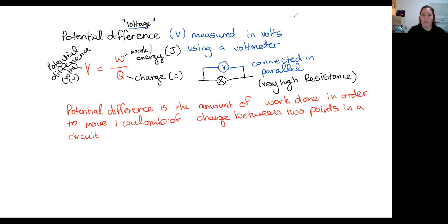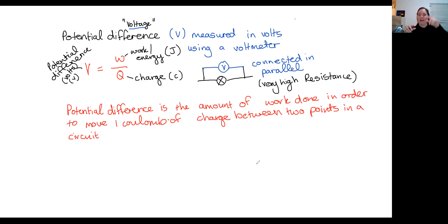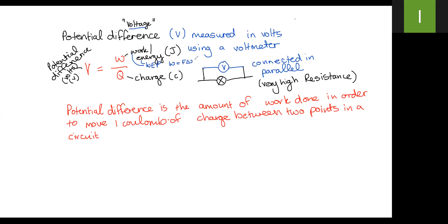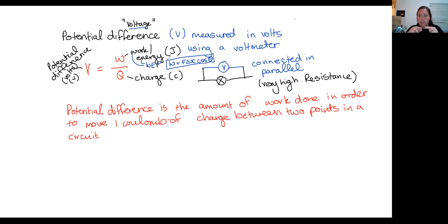There's a question about whether we could replace W with F delta X cos theta. Sometimes they have a question where you have a motor on a circuit lifting a weight through a height, in which case there's no restriction linking this to your section on work, energy, and power. So it is possible if a motor is doing work that we can link it to that equation — but only if it's a motor lifting something up do we use W equals F delta X cos theta.